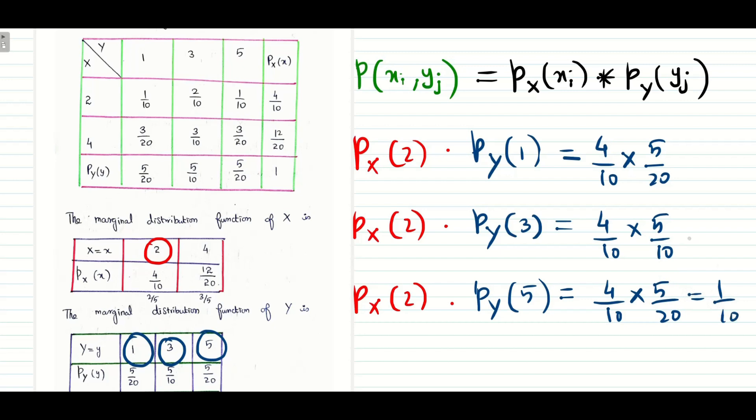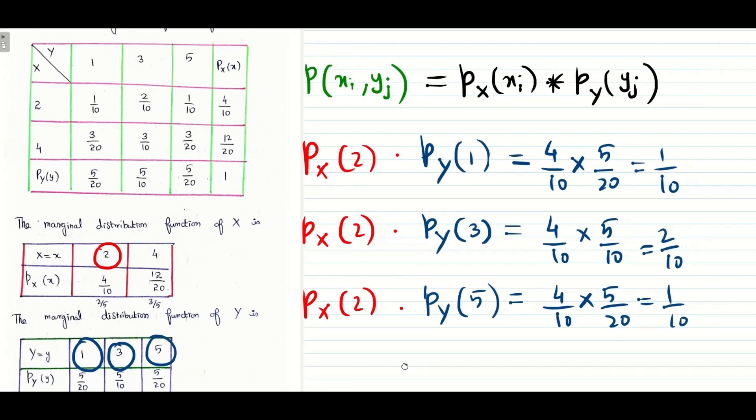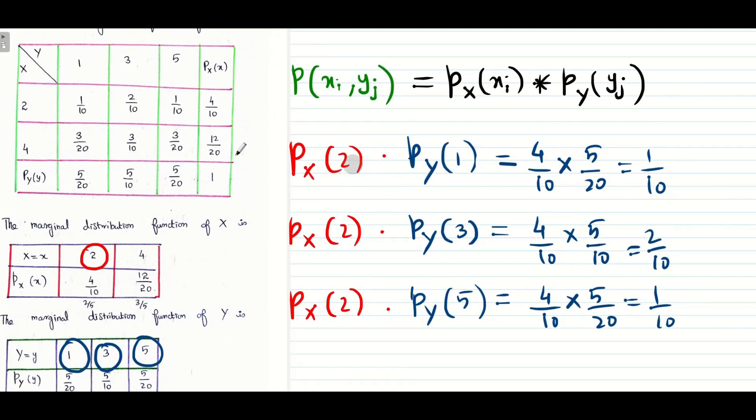So it is going to be 1 by 10, 2 by 10, 2 by 10, and 1 by 10. Now let us check the data with the table values. So (2, 1) is 1 by 10, (2, 3) is 2 by 10, (2, 5) is 1 by 10. So this is going to be probability of (2, 1), probability of (2, 3), probability of (2, 5).